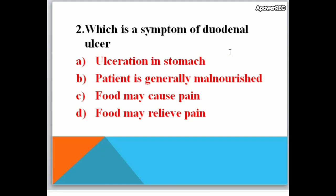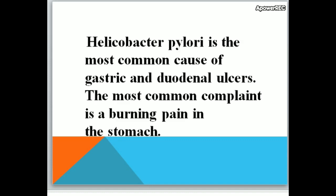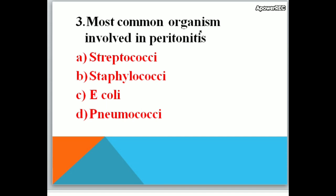Which is a symptom of duodenal ulcer? A. ulceration in stomach, B. patient is generally malnourished, C. food may cause pain, D. food may relieve pain. Correct answer is food may relieve pain. In duodenal ulcer, food may relieve pain. Helicobacter pylori is the most common cause of gastric and duodenal ulcers. The most common complaint is a burning pain in the stomach.